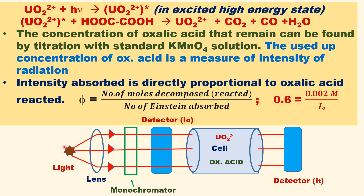The setup consists of a light source and a lens used to focus the light radiation towards the cell. A monochromator is used to allow only one wavelength of radiation. A detector is used to measure the incident radiation intensity. The cell contains uranyl sulfate and oxalic acid, and the incident radiation is allowed to pass through this cell.